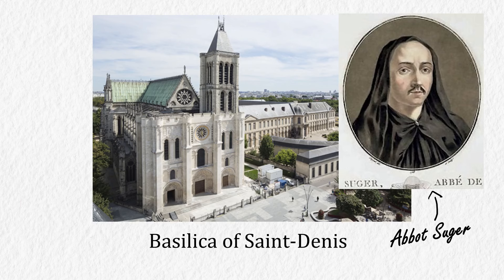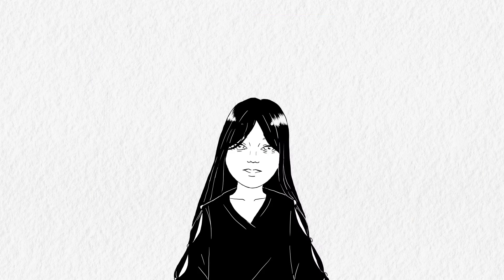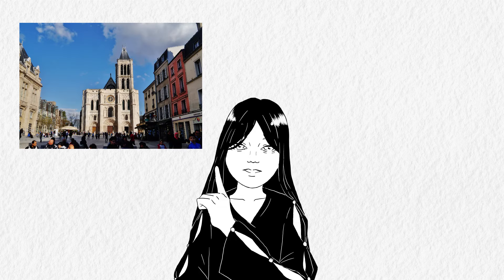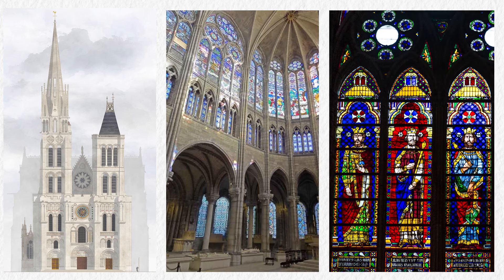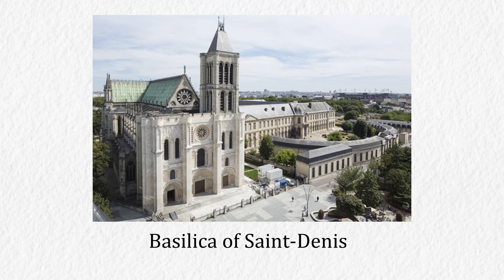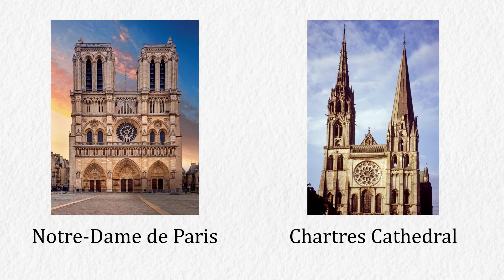Since the building was constructed to honour God, Suger came up with the concept to have the construction rise high into the sky — or into the heavens — and have more light in its interior since light is related to the divine. That's why he rebuilt portions of the Abbey church with emphasis on vertical features like spires and pointed arches, and included bigger and more windows. Following the rebuilding of the Abbey of Saint-Denis, numerous cathedrals in France were constructed in this style, including Notre-Dame de Paris in 1163 and Chartres Cathedral in 1194.